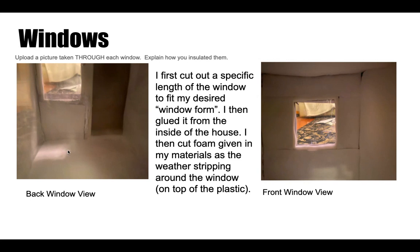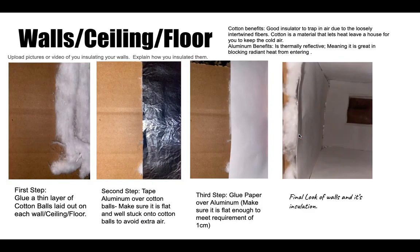As you can see from the back view, you can see the door and the window, and from the front view you can see the other window. For my wall, ceiling, and floor, the insulation that I used was cotton and aluminum. I first unraveled the cotton balls so it could be a thin layer over each of the walls.